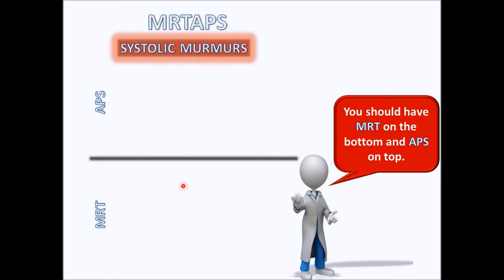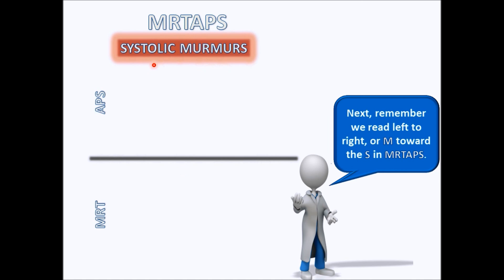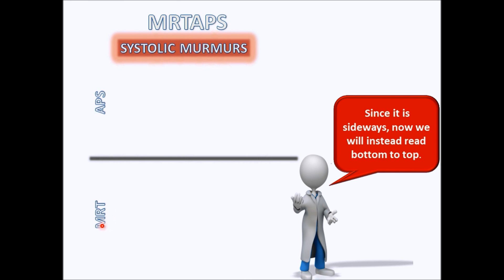Remember that MRT should always be at the bottom and APS should be at the top. Normally we read left to right, but since we've turned this sideways, we're going to read from bottom to top instead. This is important — the M is our anchor. It's where we always start, and we always go in this direction when it comes to Mr. TAPPS.